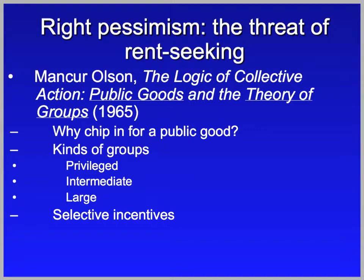So the idea is that smaller groups have better chances of getting the public goods they want. There's one other way Olson suggests groups might be organized to attain public goods, and that's what he calls selective incentives. The idea is that one might get a group organized by giving contributors some selective incentives — something valuable not available to those who didn't contribute. For instance, if you joined a lobbying organization you might get annual membership meetings for networking, not available to non-members.